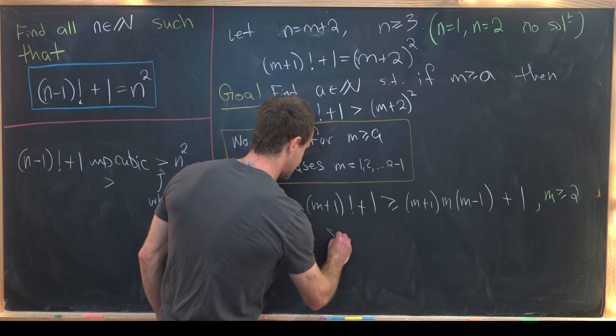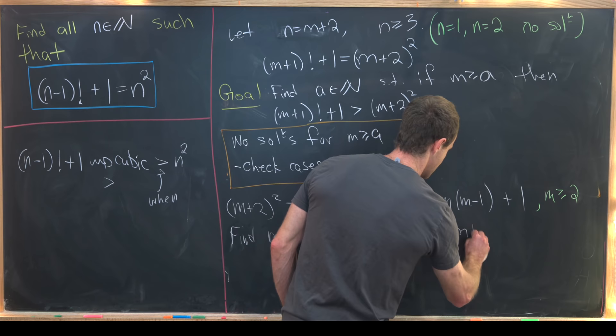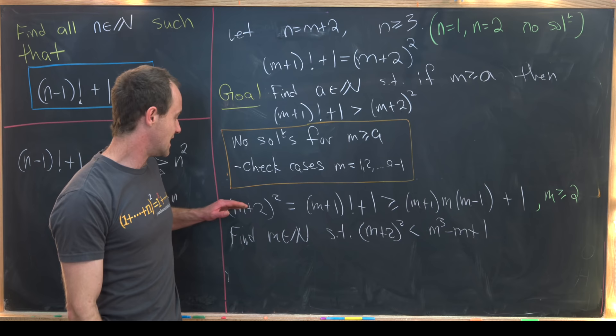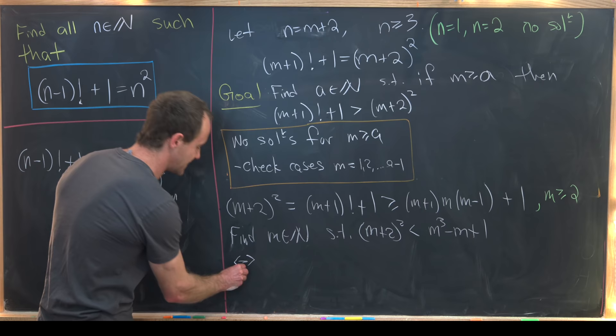So we want to find natural numbers m such that m plus 2 squared is strictly less than this cubic polynomial over here which can easily be calculated. That is m cubed minus m plus 1. So notice if this inequality is satisfied then this equality right here is impossible. And thus we found our value of a.